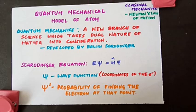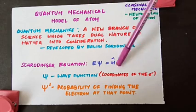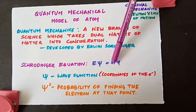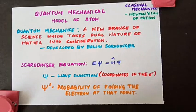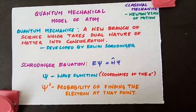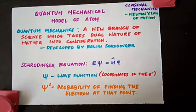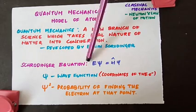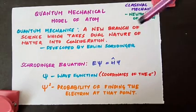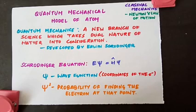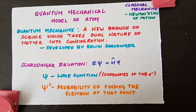For a system such as an atom, this is the Schrödinger equation. Here, Ĥ is the Hamiltonian operator — a mathematical operator — and Schrödinger gave a recipe, a method, to construct this operator from the expression for the total energy of the system. E is the energy and ψ is the wave function. When this equation is solved, the solution gives the values of E and ψ.